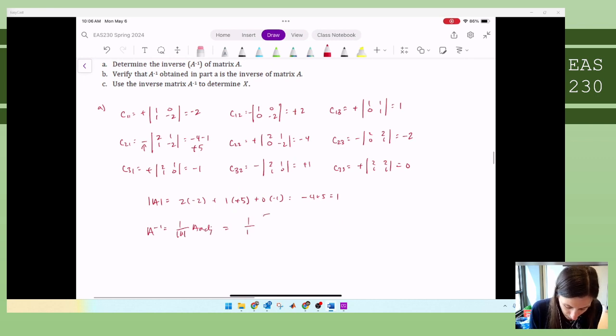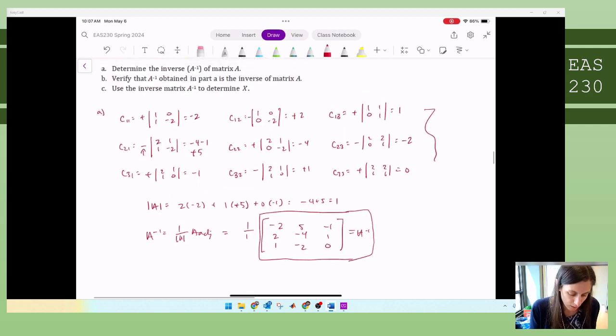So that means A inverse is 1 over the determinant of A times A adjoint. So it's 1 over 1 times these values transposed. So these become my first column, negative 2, 2, 1. That's correct. These values become my second column, 5, negative 4, negative 2, 1, 1, 0. Also correct. And there we go. There is my inverse. I don't need to account for this because it's a 1. So this is my inverse. Okay, step number one done.